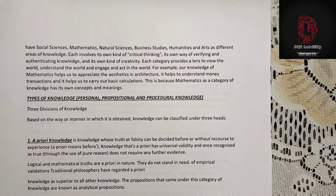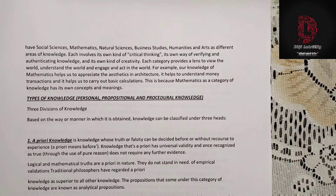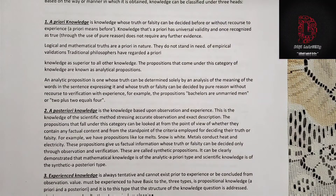Now we come to the types of knowledge: personal, propositional, and procedural knowledge. Based on the way or manner in which knowledge is obtained, it can be classified under three heads. The first is a priori knowledge. A priori knowledge is knowledge whose truth or falsity can be decided before or without recourse to experience. 'A priori' means 'before.'